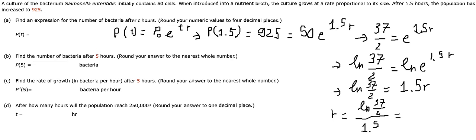This gives us r = 1.9452. Because the question wants us to round to four decimal places, we have four decimal places here. The expression is P(t) = 50*e^(1.9452t).